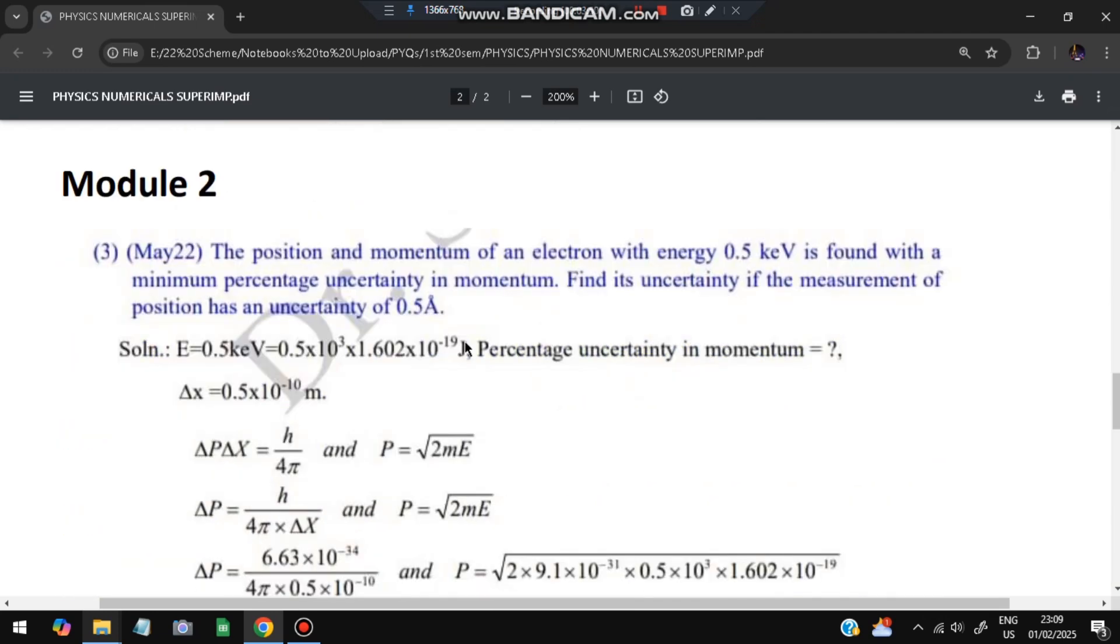Moving on to module 2, we have a question to find out the uncertainty in the momentum and the position. Here we'll be using Heisenberg's uncertainty formula. Energy is given to us and the percentage of momentum uncertainty we have to calculate. The uncertainty in position is 0.5 angstrom. So Δx is given and E is given, so we'll substitute this formula. Δx is given and h/4π is given, so P value we need to calculate.